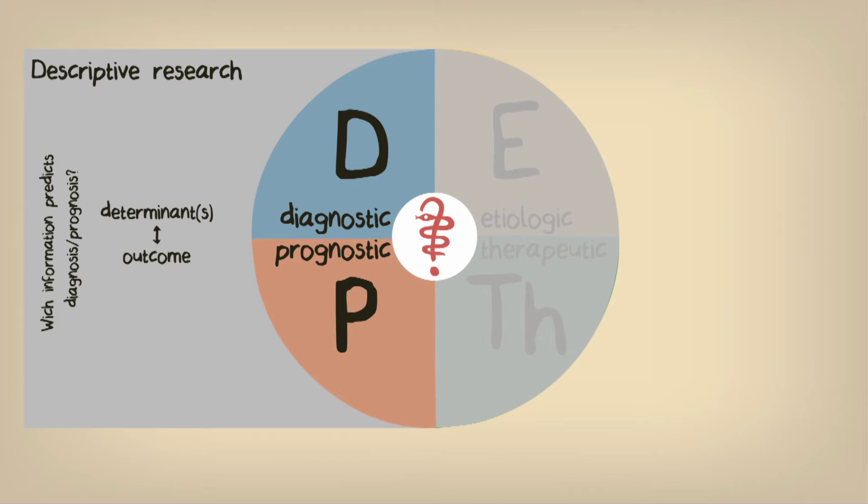In diagnostic research, we're interested in predicting the presence of disease, and therefore we want our research to describe how patient information and tests can help determine whether a patient currently has a specific disease. In prognostic research, we try to predict the future. We want our research to describe how patient characteristics can help to predict the course of their disease.